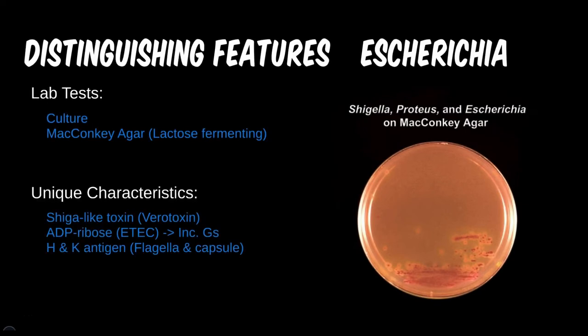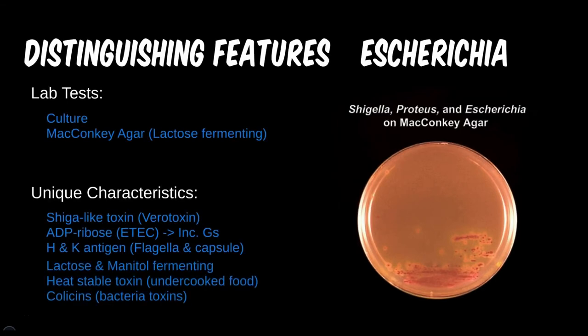E. coli's verotoxin virulence factor is the cause of HUS in this infection. It is called Shiga-like toxin for its commonalities with Shigella. We also discussed how another organism increases the activity of G protein via ADP ribosylation — which microbe does E. coli share this characteristic with? Though it has many other non-specific characteristics, test questions frequently bring up the aspect of its toxins' temperature sensitivity. Recommendations to properly cook food help to prevent disease from this and other microbes.